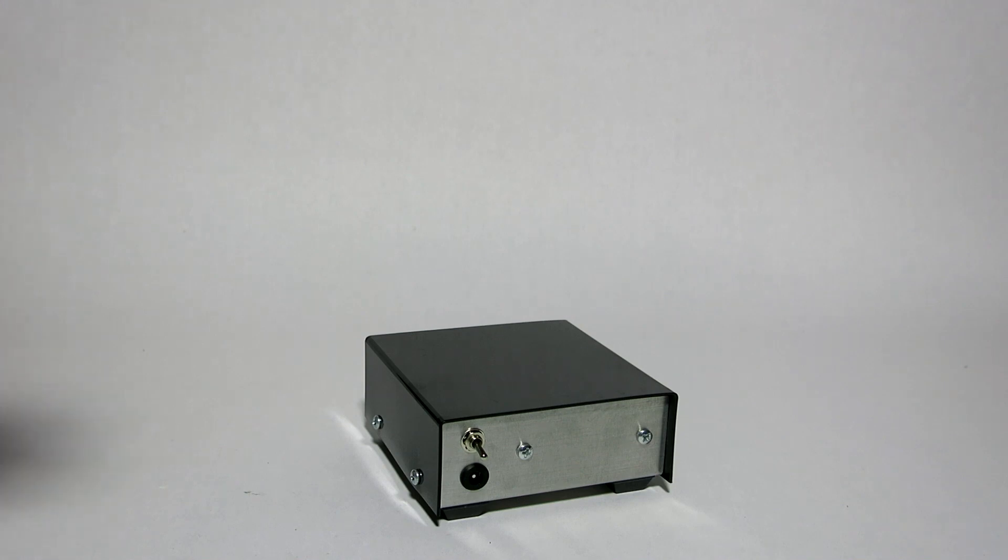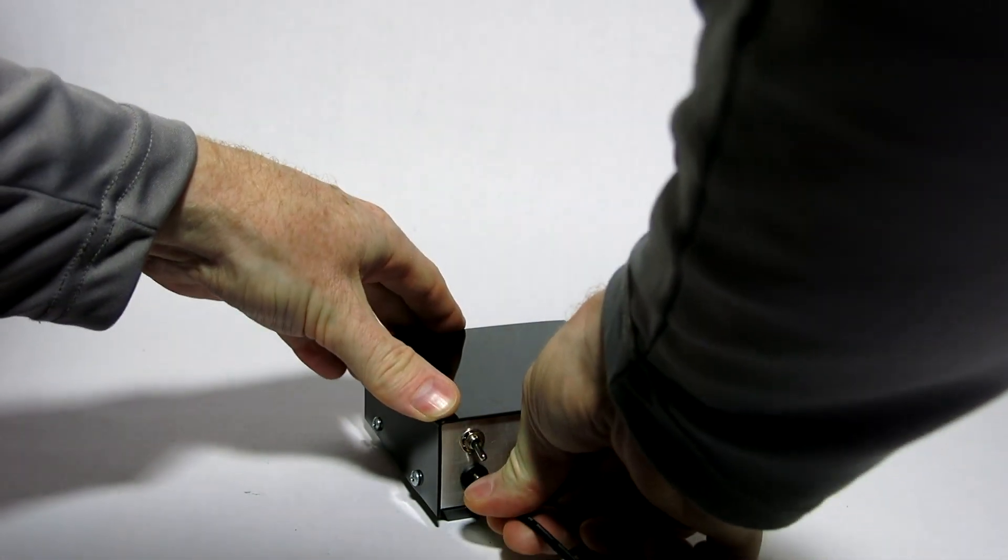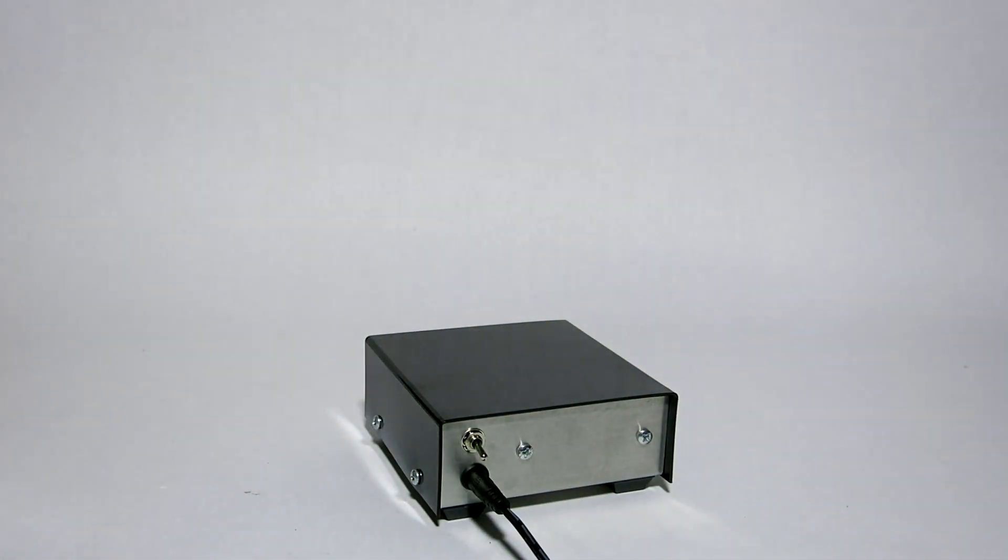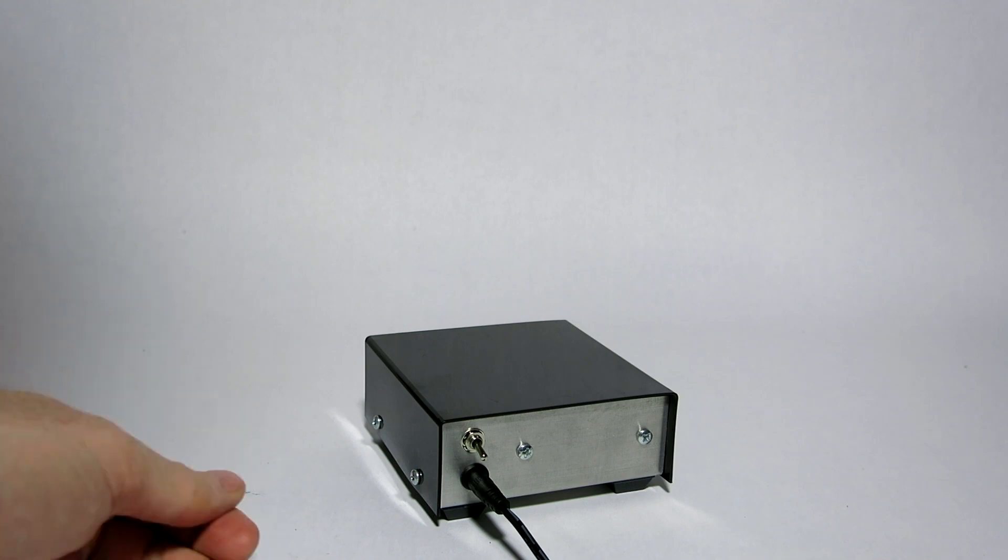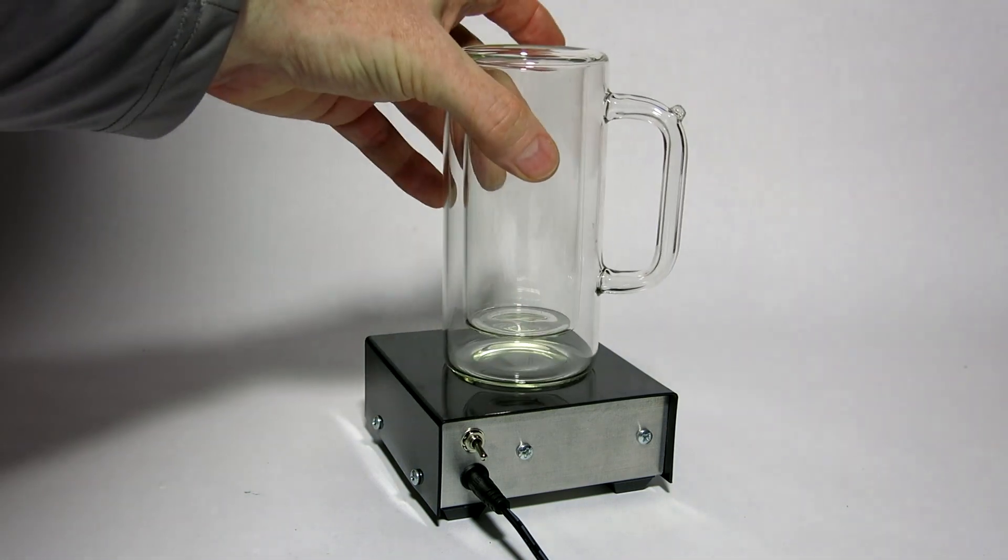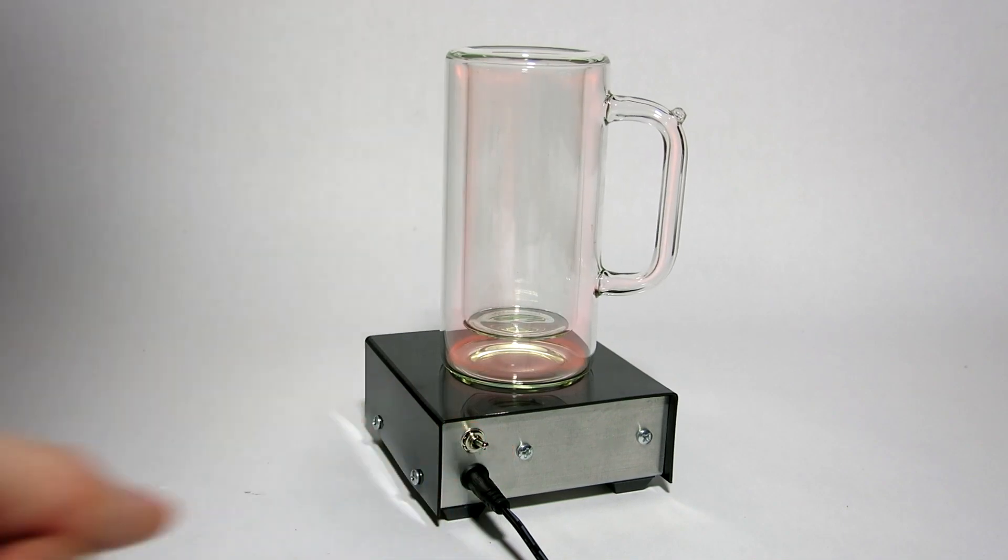It's powered by a 12 volt DC input and comes with a wall adapter. You could also run this from a 12 volt battery. You just put your item on top of the Glowtron and turn it on and it lights up.